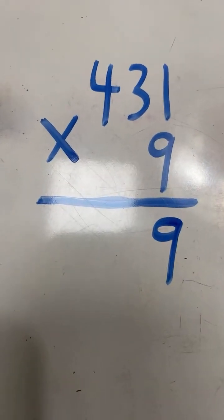1 times 9 equals 9. We do not need to regroup in the ones place since our product is less than 10.